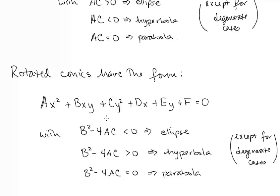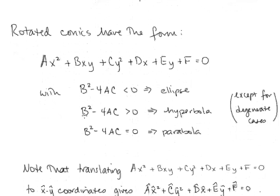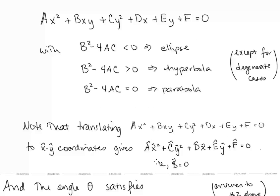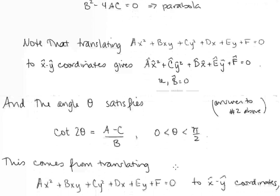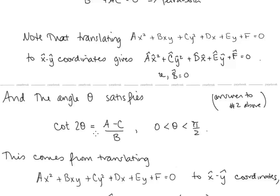If this is the equation of a rotated conic in x-y form, when we translate it to x-hat y-hat coordinates, the coefficient of x-hat·y-hat will be zero. Making that change of coordinates and setting the coefficient of x-hat·y-hat equal to zero gives us cot(2θ) = (a − c) / b, where theta is the angle of rotation between 0 and π/2. This answers the second question: how to find the angle of rotation.